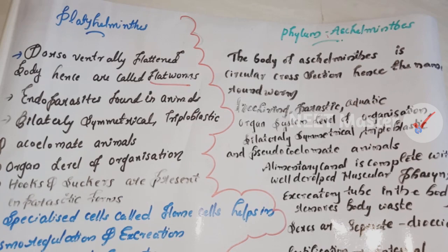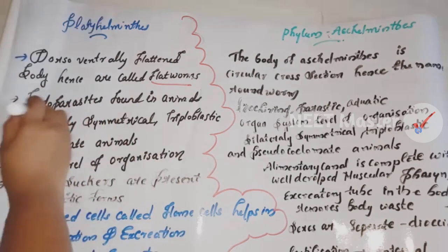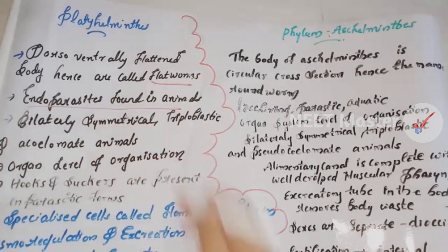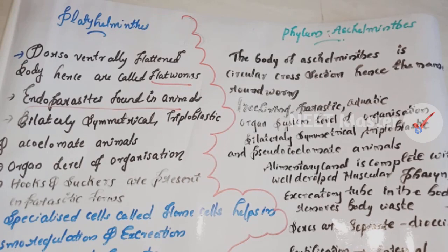Platyhelminthes includes both ectoparasites and endoparasites. There are parasites that live inside animals including mammals. Platyhelminthes are bilaterally symmetrical, triploblastic, and acoelomate animals.